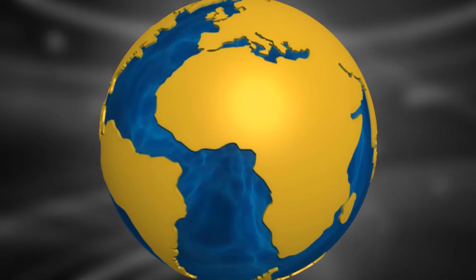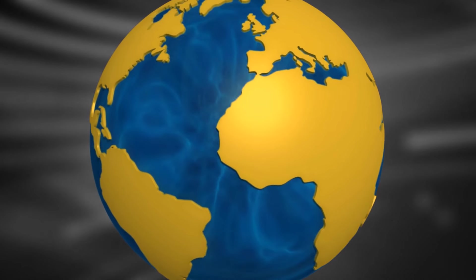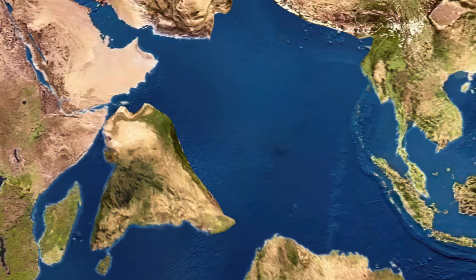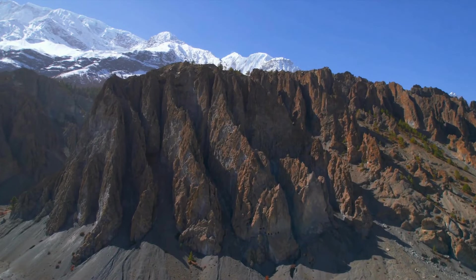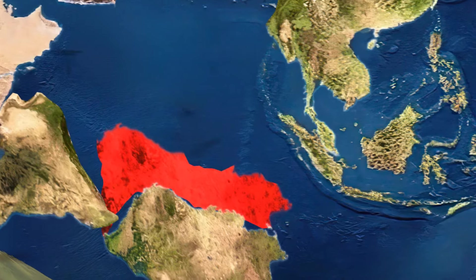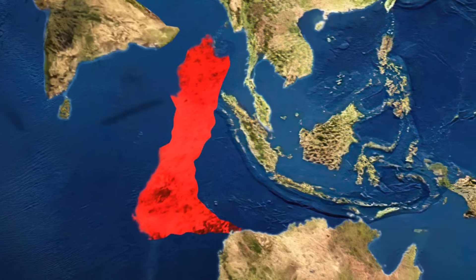Usually, specialists track this continental vanishing through off-scraping. That's how they figured out, for instance, that India bumped into Asia and gave us the majestic Himalayan mountains. But for Argo Land, things were a bit more complicated.